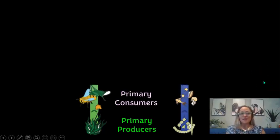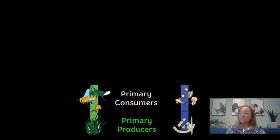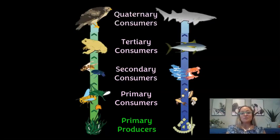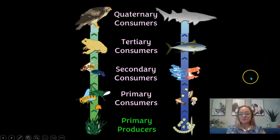Looking at two examples: on land, primary producers are plants; in the ocean they could be phytoplankton or seaweed, which is actually an algae. Then we have our primary consumers, which are the herbivores, followed by secondary consumers, tertiary consumers, and maybe a fifth trophic level of quaternary consumers, depending on whether there's enough available energy.